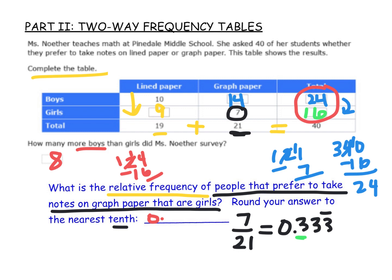You may sometimes be asked to express your answer as a percent. You would do 7 divided by 21 to get the decimal, then multiply that by 100 to get the percent. So this would also be known as 33% of the people preferring to take notes on graph paper.